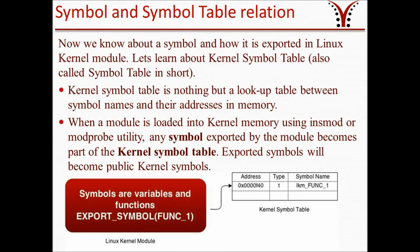Now we know about a symbol and how it is exported in a Linux Kernel module. Let's learn about the Kernel Symbol Table, also known simply as Symbol Table. The Kernel Symbol Table is nothing but a lookup table between symbol names and their addresses in memory. When a module is loaded into Kernel memory using insmod or modprobe, any symbol exported by the module becomes part of the Kernel Symbol Table, and exported symbols become public Kernel symbols.